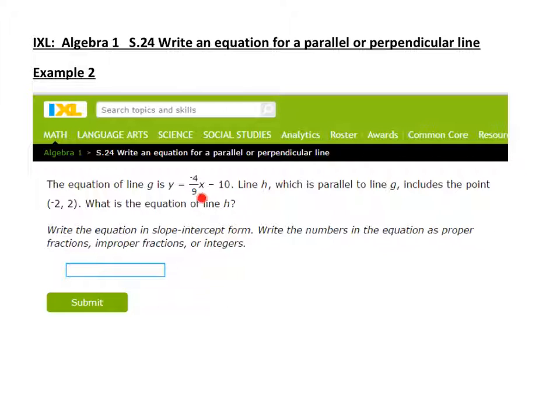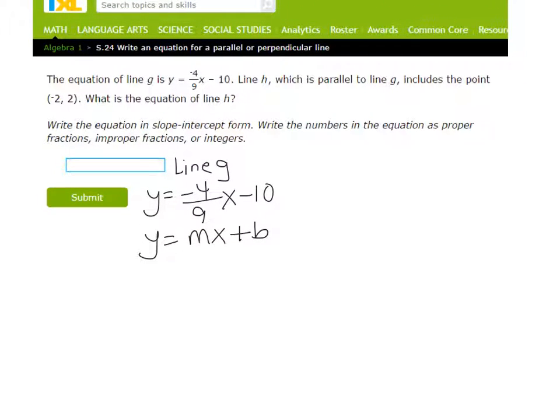Okay, we have a line g, its equation is y equals negative 4 ninths x minus 10, and we're told that we have a parallel line, line h to g, that passes through a particular point here. So how can we write the equation of this parallel line h? All right, let's start out with our line g. We have y equals negative 4 ninths x minus 10. Again, we have already our y is isolated, so we can read our slope right off of the equation here, and we see that line g has a slope of negative 4 ninths.